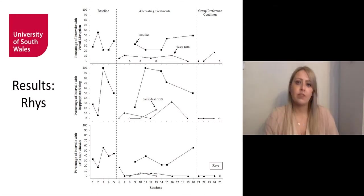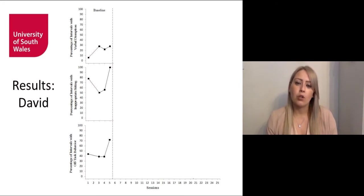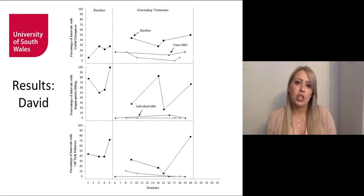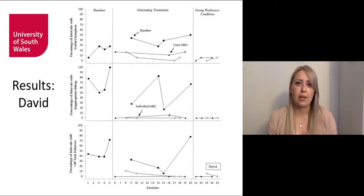The next graph displays results for David. During baseline, David engaged in low to moderate levels of verbal disruption and moderate to high levels of inappropriate sitting and off-task behaviour. Upon introduction of the alternating treatments, we observed decreases in all behaviours in both versions of the Good Behaviour Game, with zero or near zero levels of inappropriate sitting and off-task behaviour.